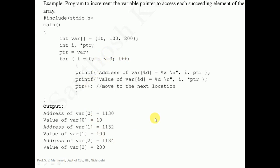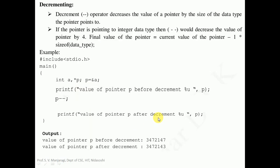That is how we can increment a pointer variable with the help of the plus plus operator. Similarly we can make use of the decrement operator. The decrement operator decreases the value of the pointer by the size of the data type the pointer points to. If the pointer is pointing to the integer data type, then the decrement operator minus minus will decrease the value of the pointer by 4, if the size of integer type is 4 bytes. The final value of the pointer is calculated as: current value of the pointer minus 1 multiplied by the size of the data type.